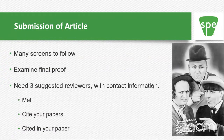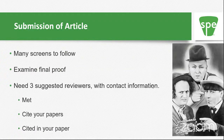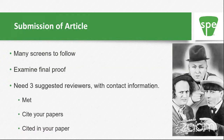You need three suggested reviewers with contact information. Choose people you've met — it puts them in a good frame of mind. They need to be experts in your area. People who cite your papers are good choices, and people you've cited in your paper are also very good. Typically most editors do not choose all three reviewers you suggest — the average is probably one — because the concern is that if they're your friend, they might review your paper favorably even if it's not good.